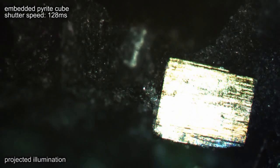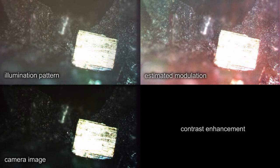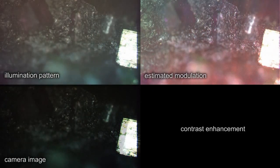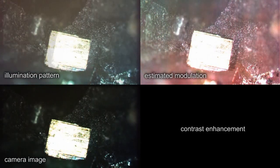We have developed a closed projector camera feedback loop that estimates the modulation of uniform white light with the specimen, even though it is physically illuminated with an arbitrary illumination pattern. This allows us to move the sample or change the microscope's parameters while using the technique.